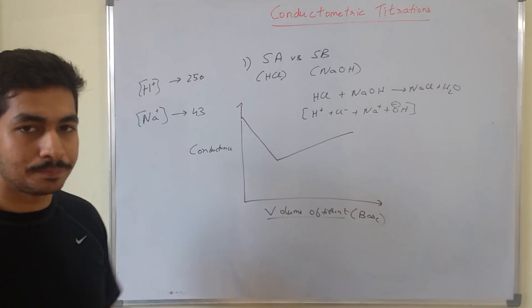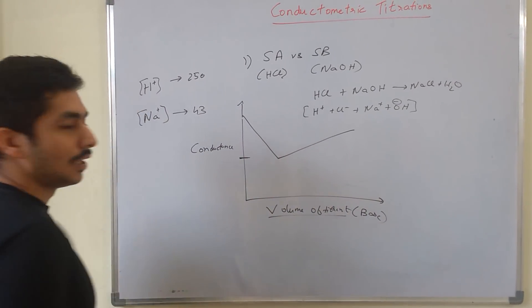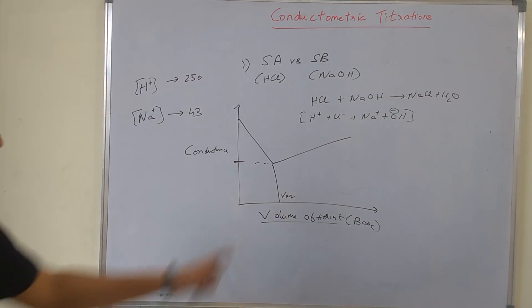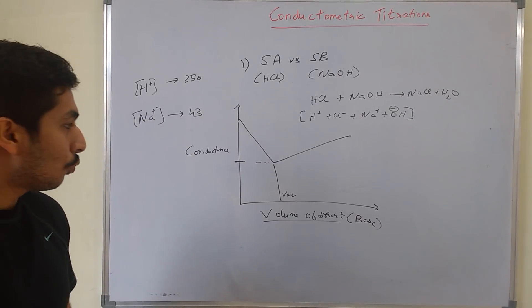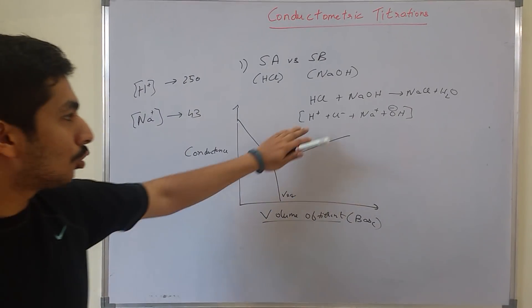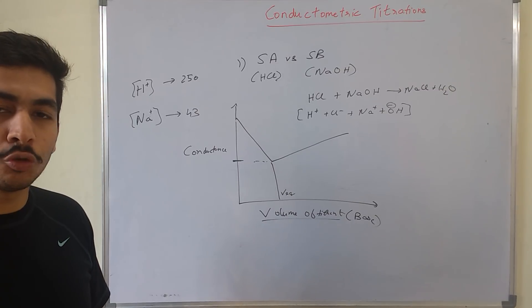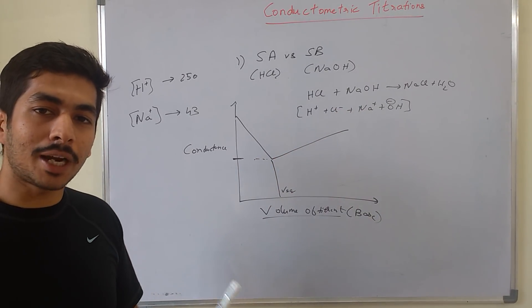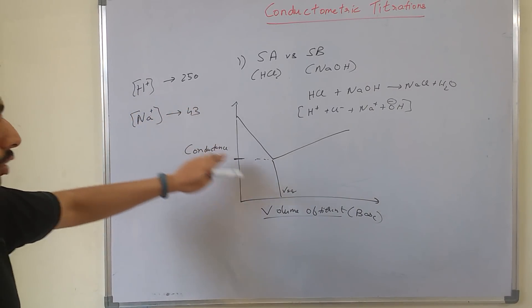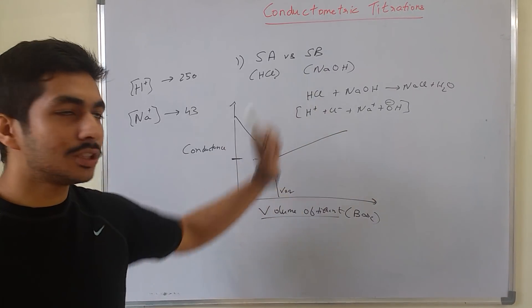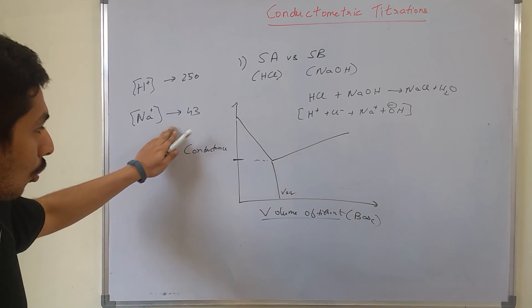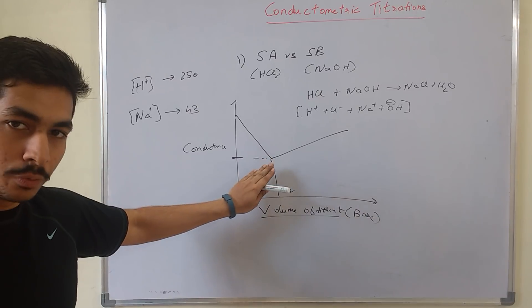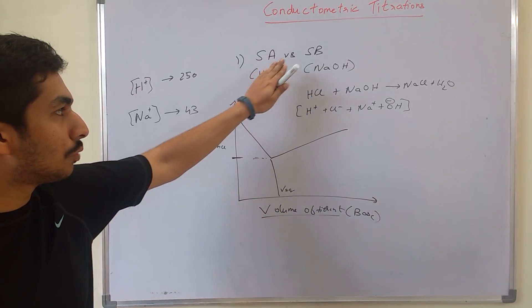At the equivalence point there is still some conductance — it does not go to zero. This is because even though all H⁺ and OH⁻ have been neutralized, NaCl is formed, so Na⁺ and Cl⁻ ions are still present in solution. Na⁺ ions have a mobility of around 43, so they still produce some conductance. That is why in a strong acid versus strong base titration, conductance will not fall to zero at the equivalence point.